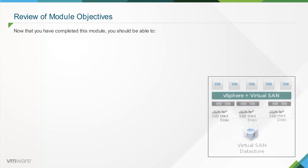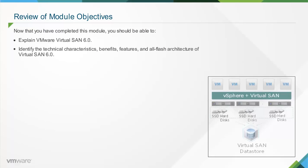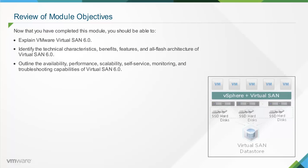Now that you have completed this module, you should be able to explain VMware Virtual SAN 6.0, identify the technical characteristics, benefits, features, and all-flash architecture of Virtual SAN 6.0, and outline the availability, performance, scalability, self-service, monitoring, and troubleshooting capabilities of Virtual SAN 6.0.